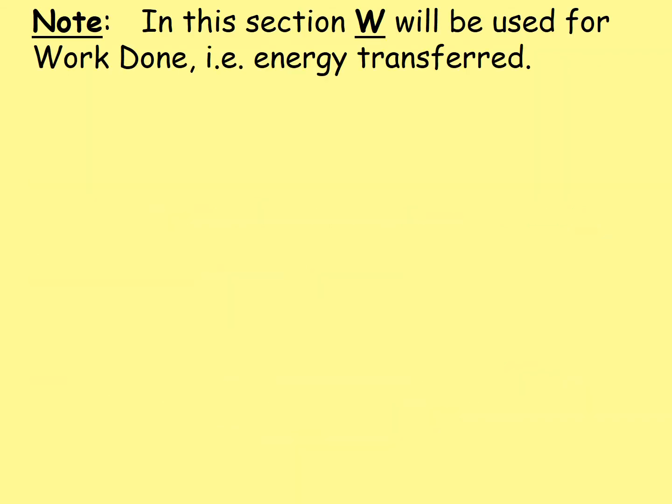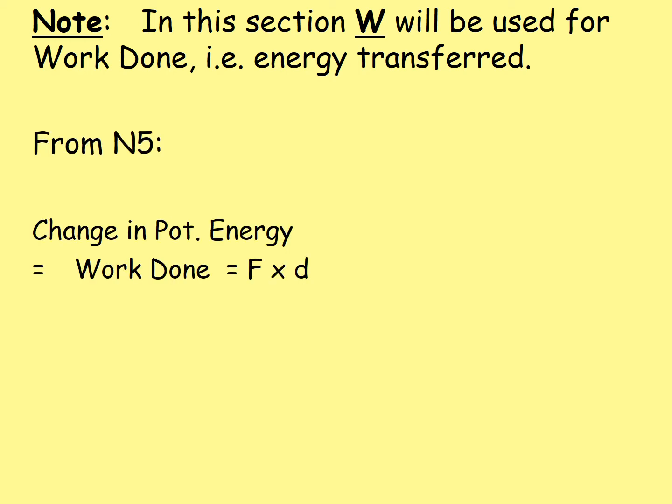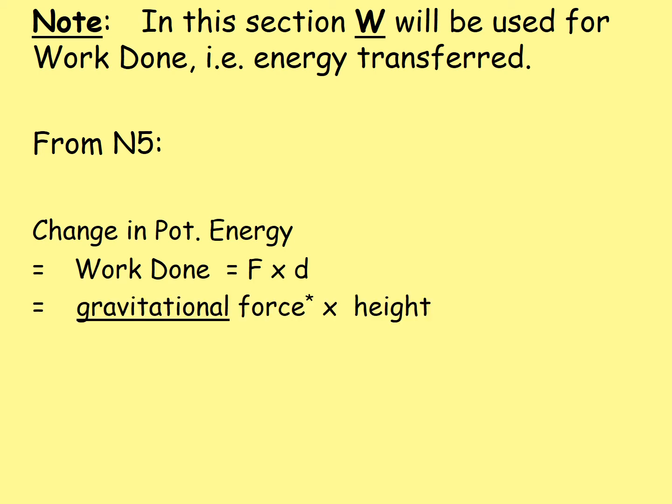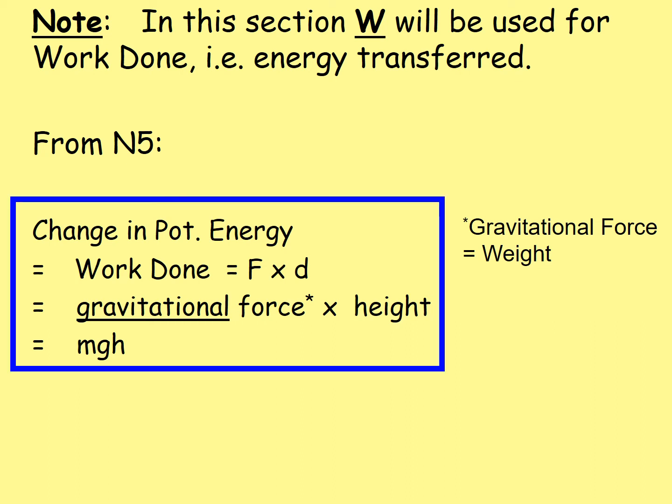Note: in this section, W will be used for work done, i.e. energy transferred, to avoid confusion with other energy types. From National 5, we know that the change in potential energy equals the work done, which is force times distance — i.e. gravitational force multiplied by height. The gravitational force being equal to weight, so we can say EP = mgh, which is a very familiar equation.